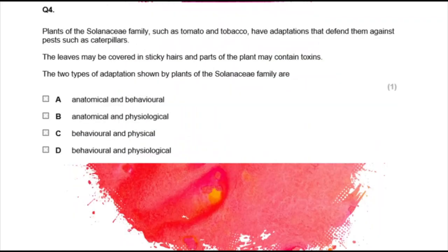Plants of the Solanaceae family, such as tomato and tobacco, have adaptations defending against pests like caterpillars. Leaves may be covered in sticky hairs and parts of the plant may contain toxins. Sticky hairs are an anatomical feature and producing toxins is physiological, so the answer is B: anatomical and physiological.